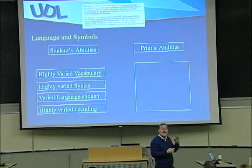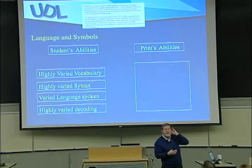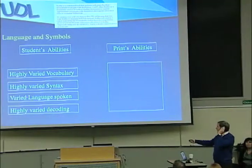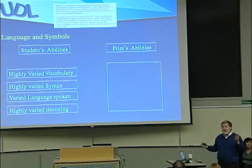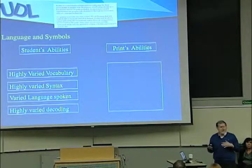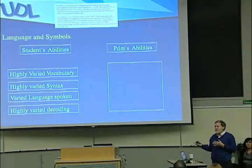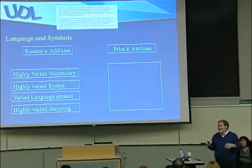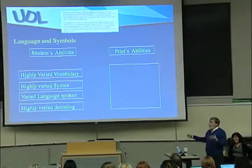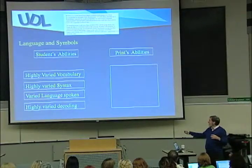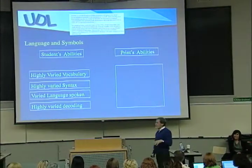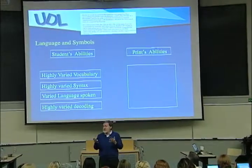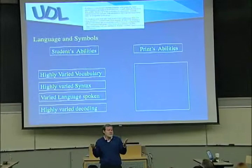What are some other disabilities print has? Most things we get in schools are in English — print almost always only gives one language. How many of your textbooks are actually bilingual? Not even all bilingual. So what about kids who speak Arabic or other languages? Google Translate will translate into 40 languages on the fly — it's amazing.